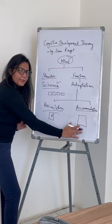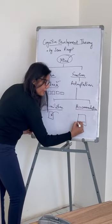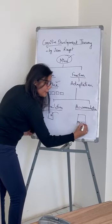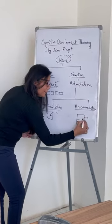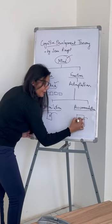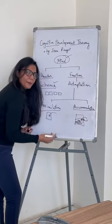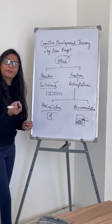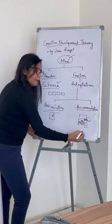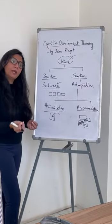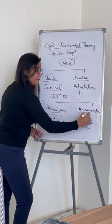Accommodation is when the existing schema is modified. In the existing schema, there is already information — for example, I know what a marker is called. Then I came to know what a pen is, and then I came to know that a pencil is also a concept. So there are different kinds of writing objects. The existing schema is modified with new information — that is accommodation.